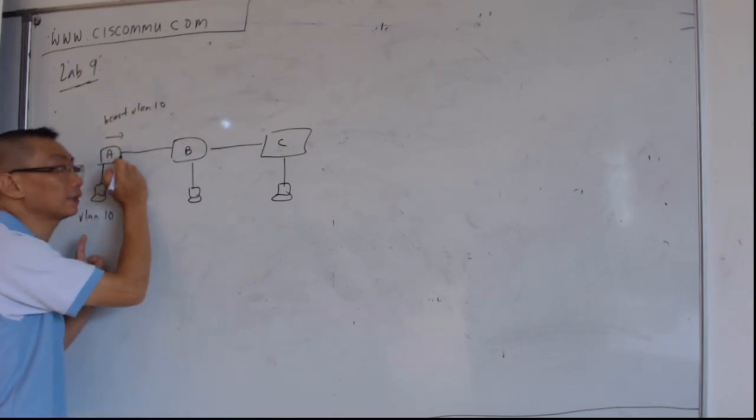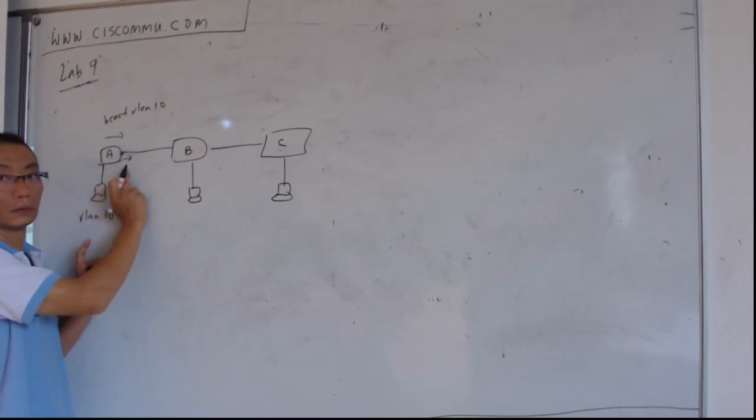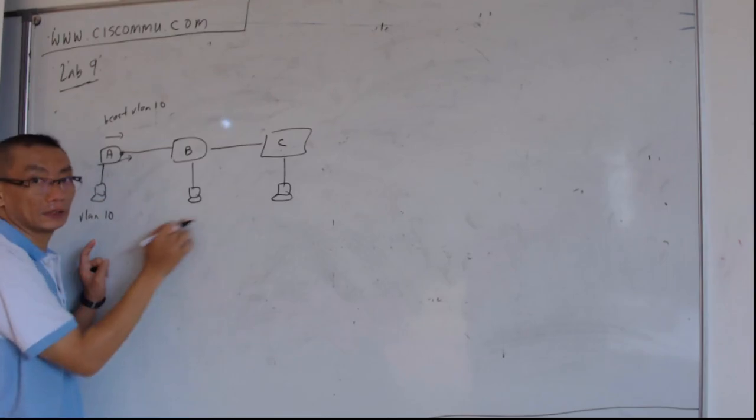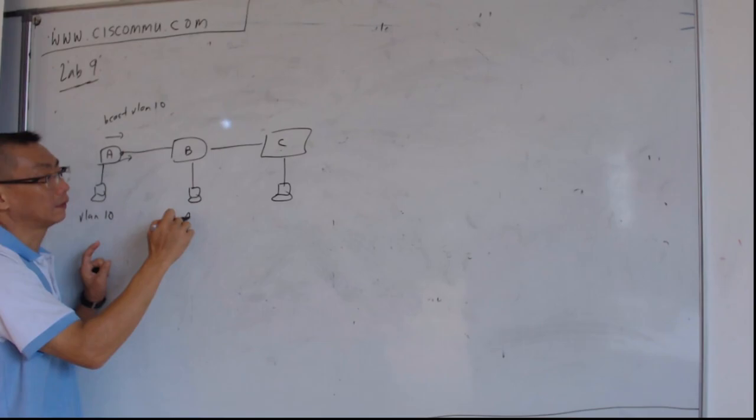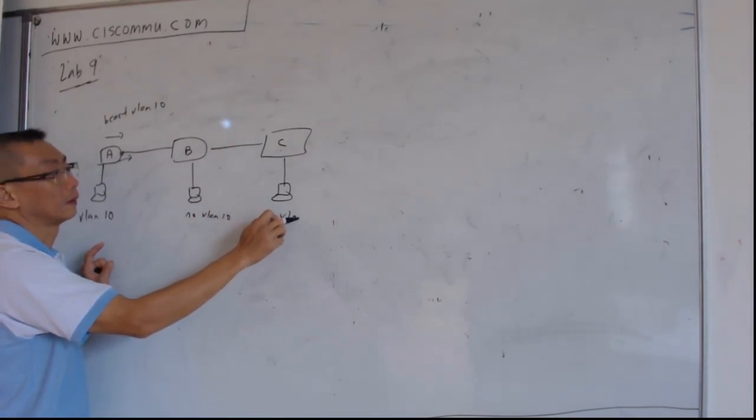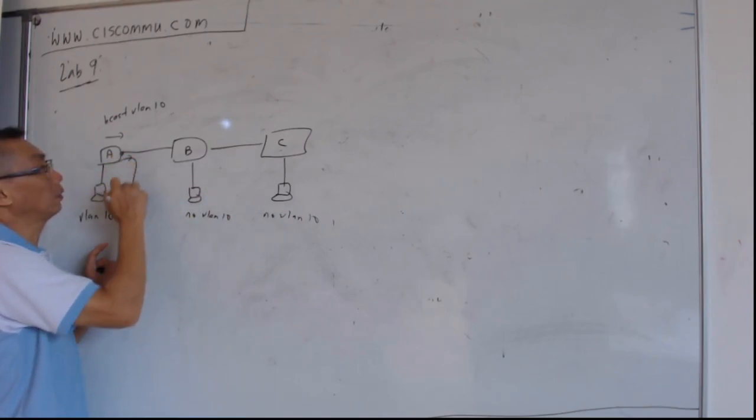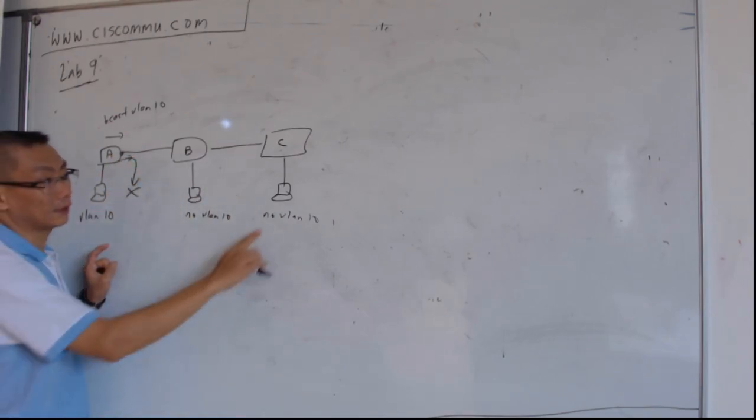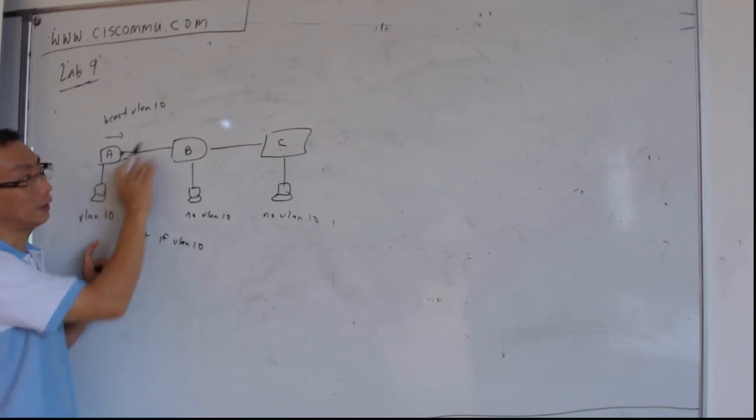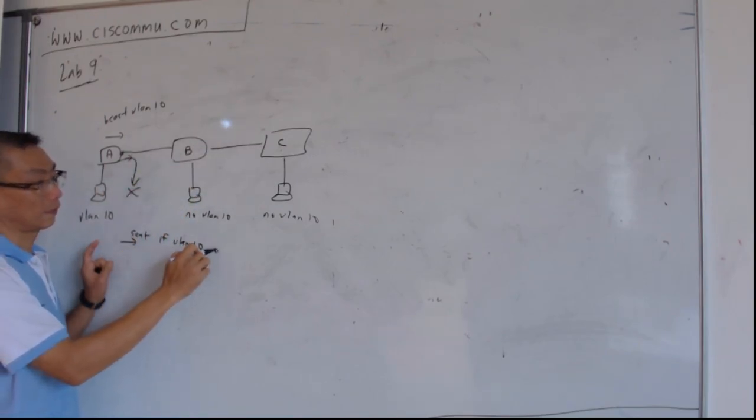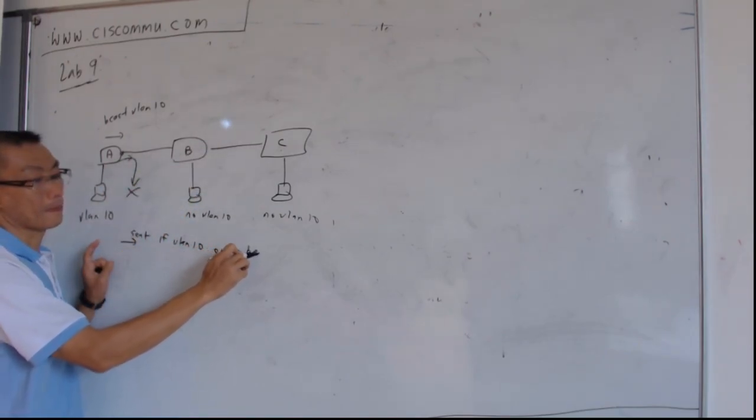So whenever there's a broadcast for VLAN 10, so switch A sent out through this port, yes or no? It depends whether there's VLAN 10 here or not. If there's no VLAN 10 here, then this one will be dropped, correct? If there's no VLAN 10 on this side of the network.